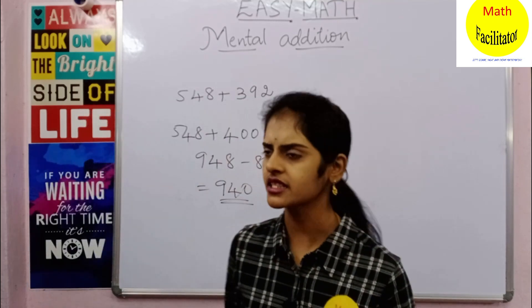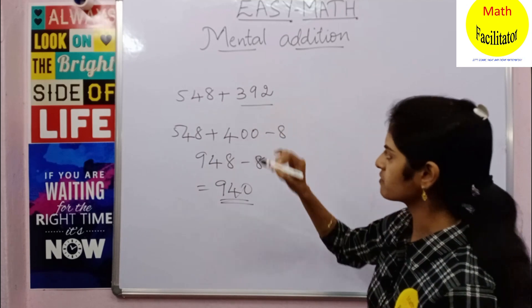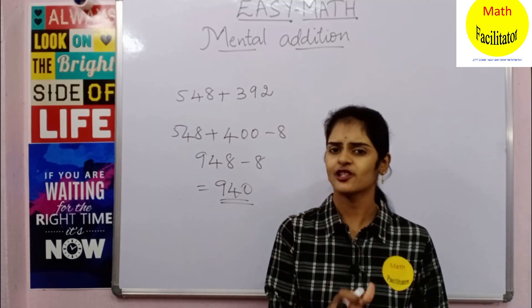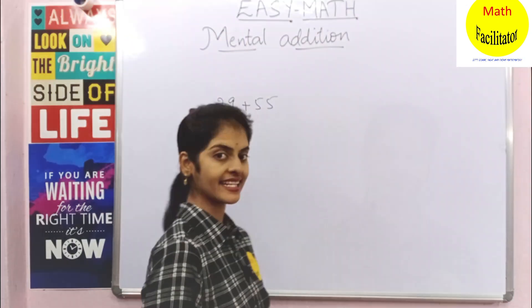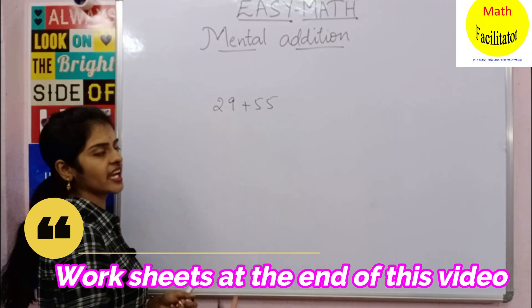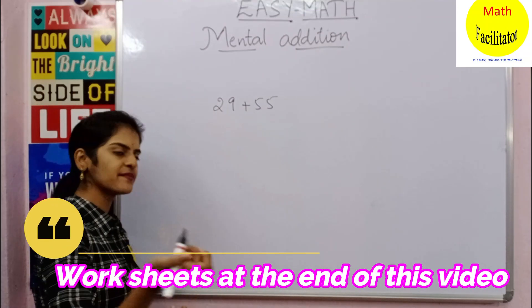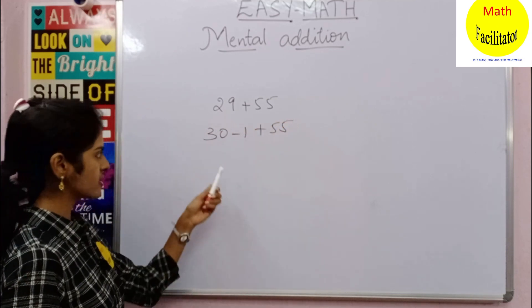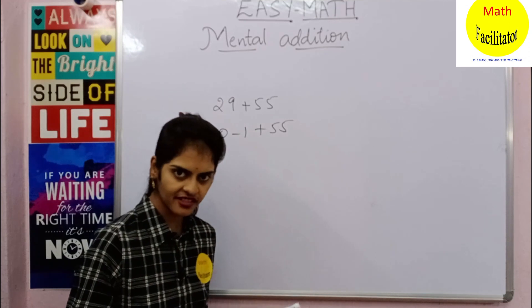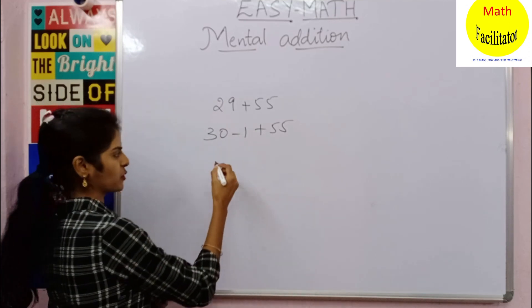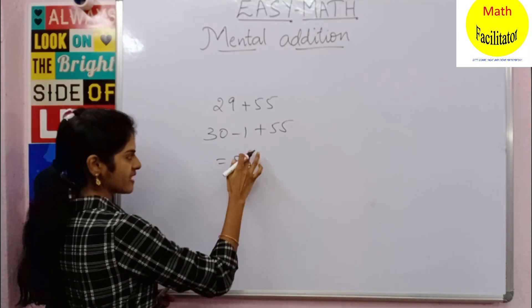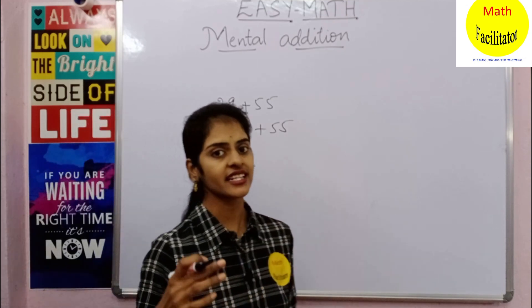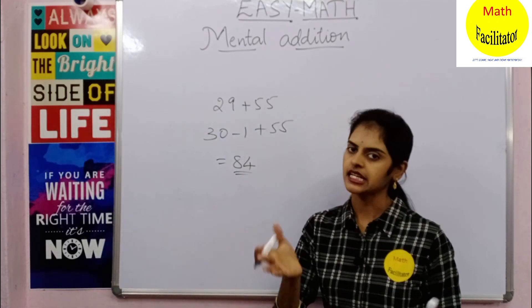Simply try to convert wherever possible into multiples of tens so that it will be easy for you. Now taking another example: 29 can be written as 30 minus 1, so 30 minus 1 plus 55. So 30 plus 55 is 85, minus 1 is 84. These steps I'm writing on the board so it will be easier for you to understand—actually you can do this orally.